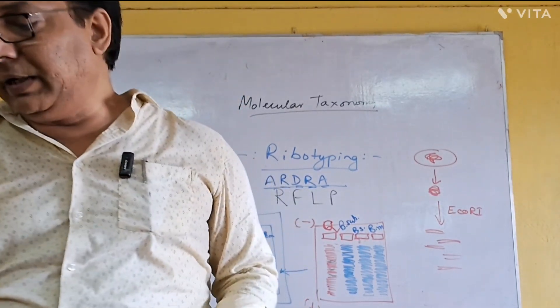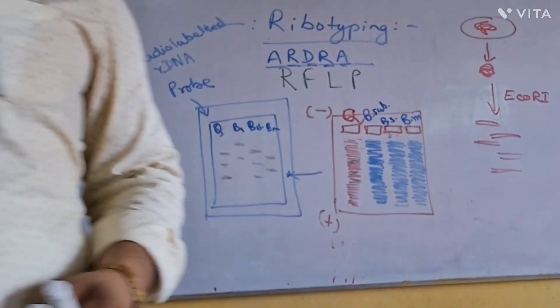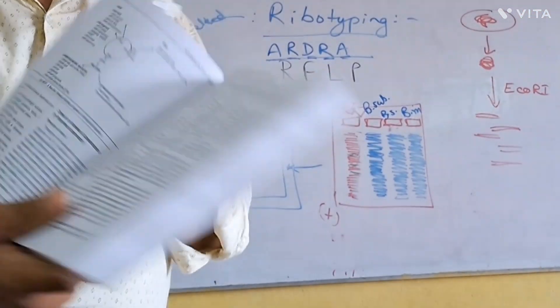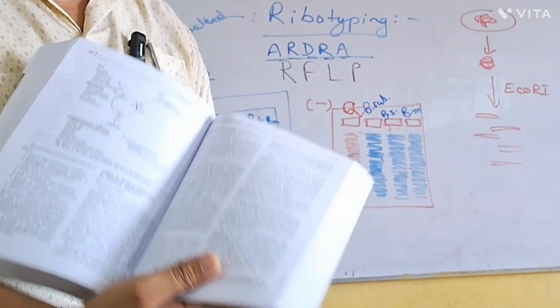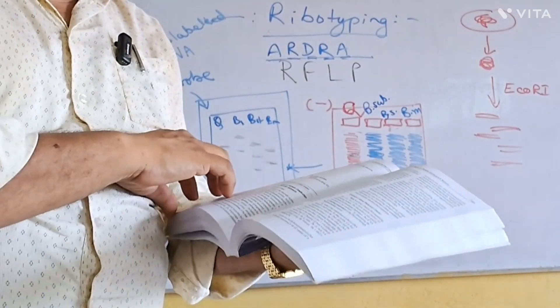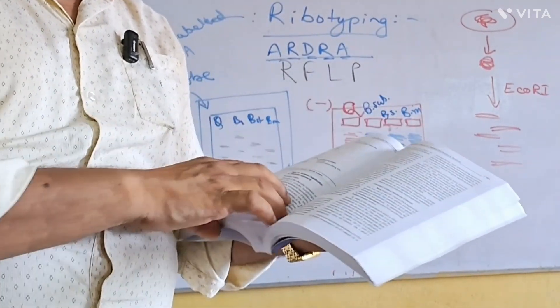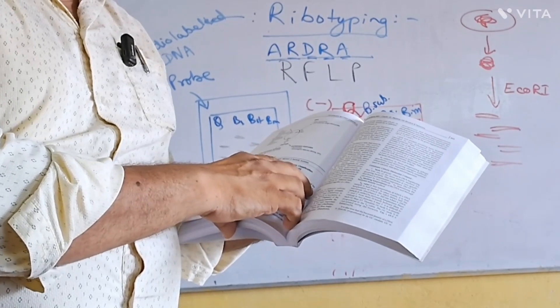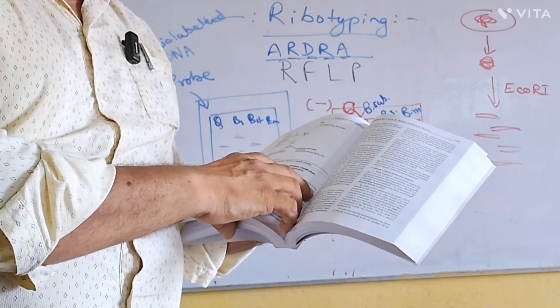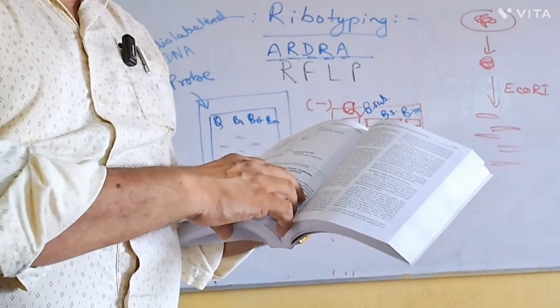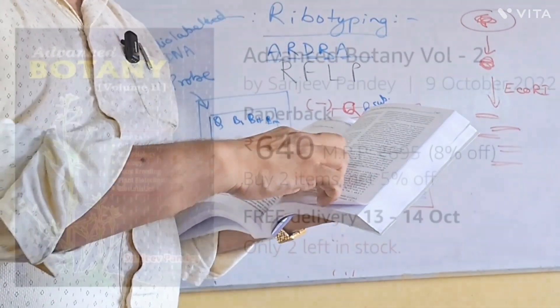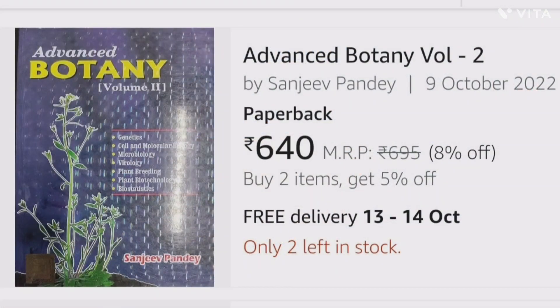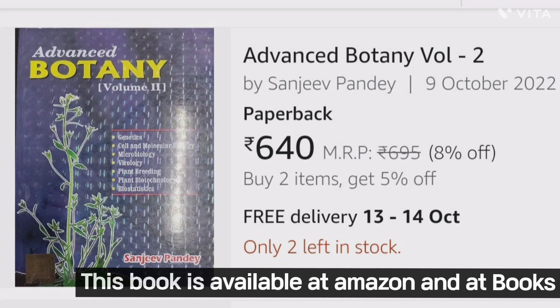All these things you will get in this book. This is a polyphasic approach. Criteria for bacterial classification: polyphasic approach, phenotypic, chemotypic, genotypic and molecular approach. All these things you will get in this book.